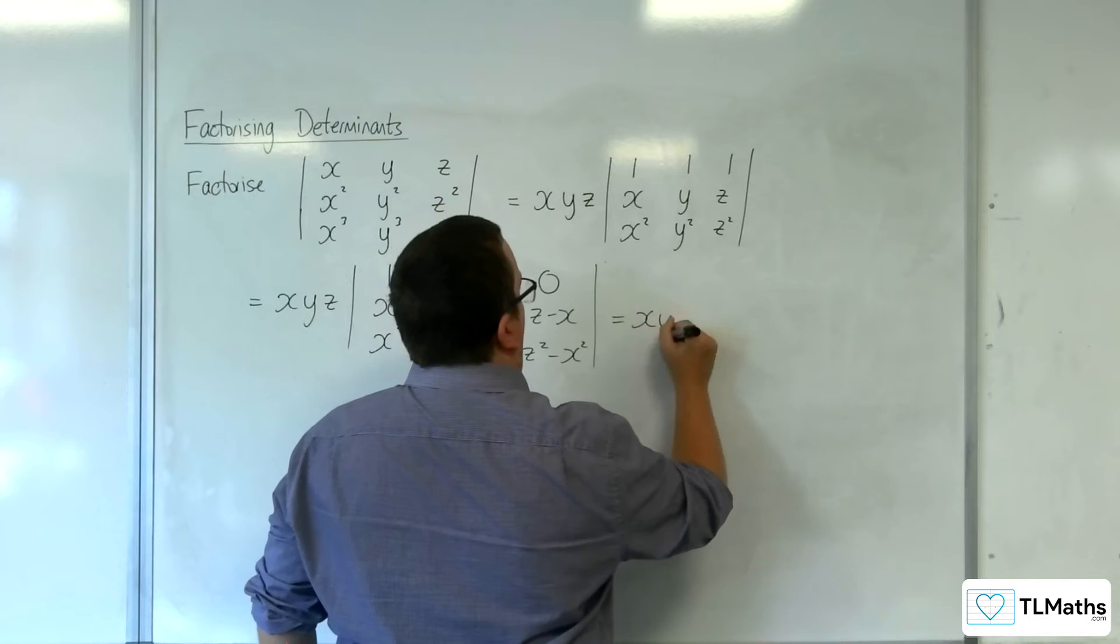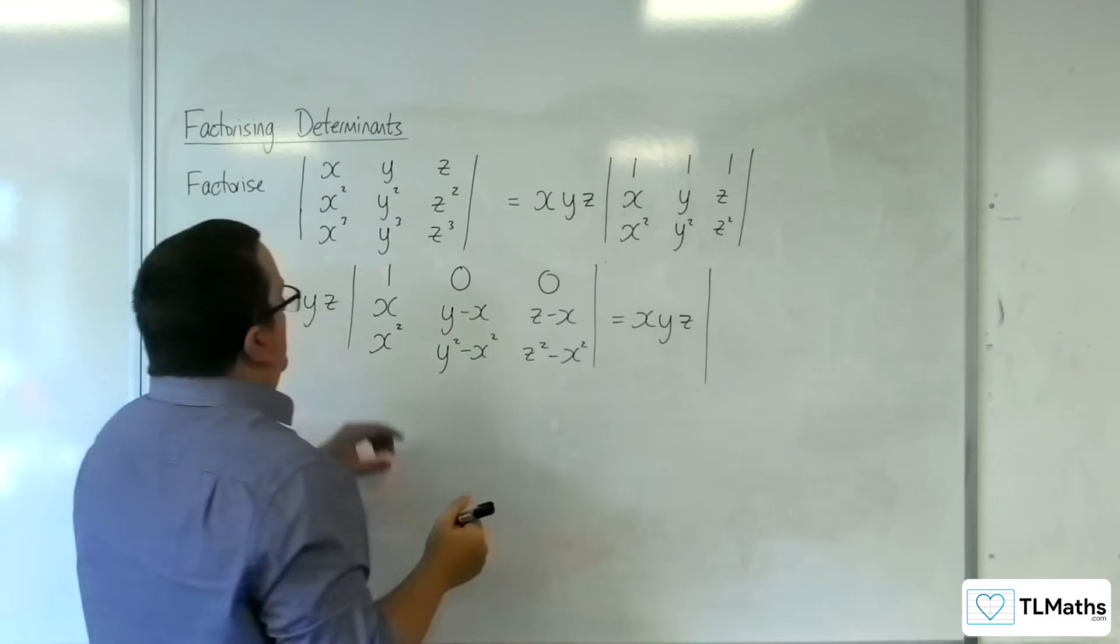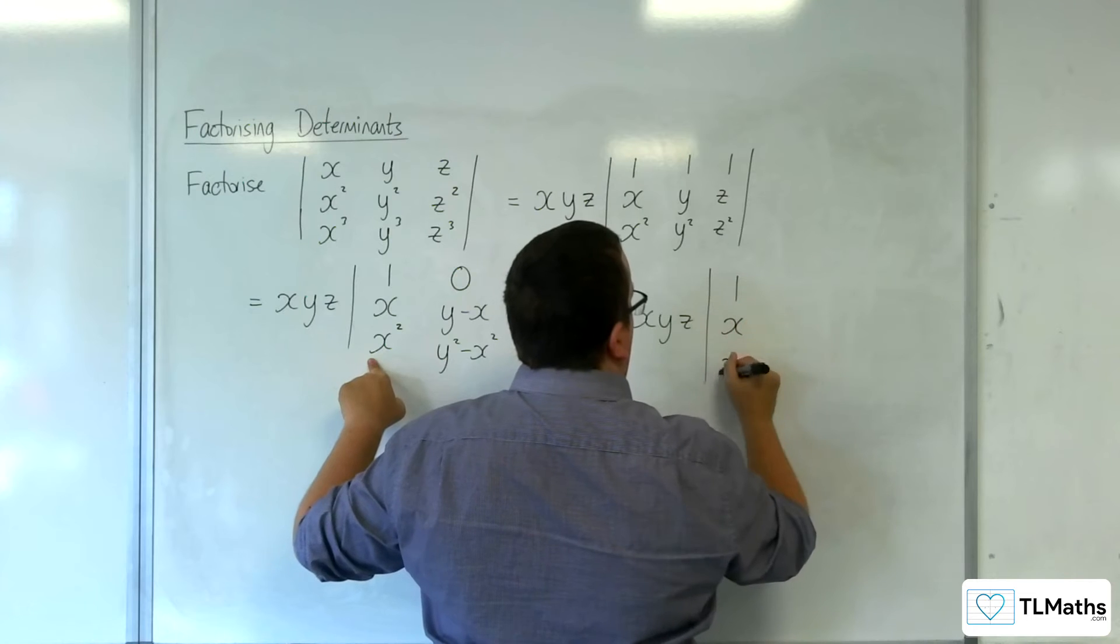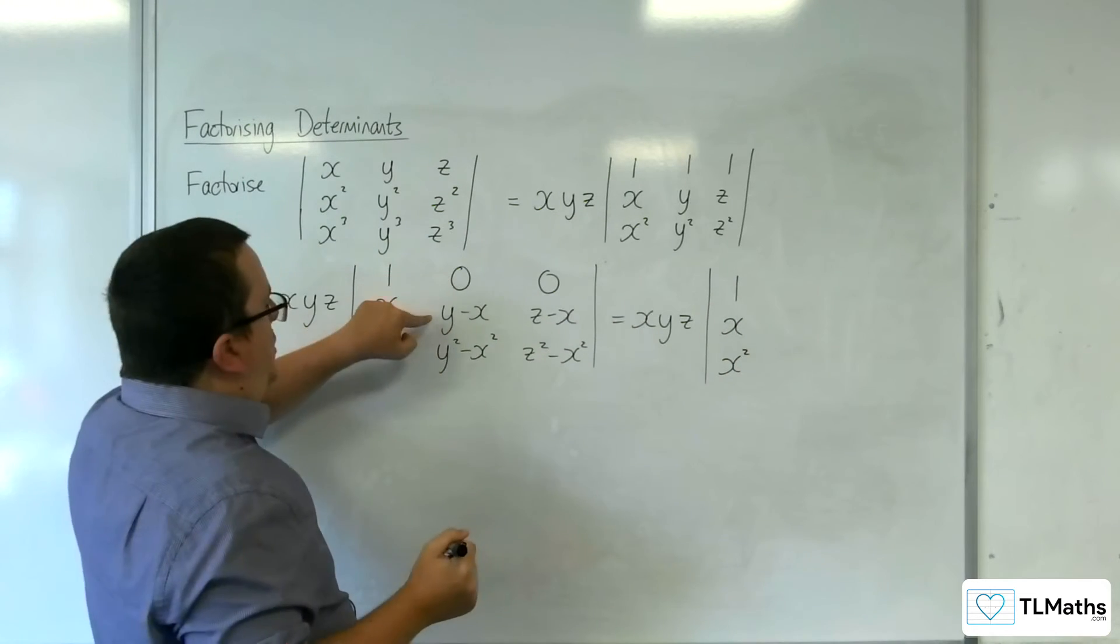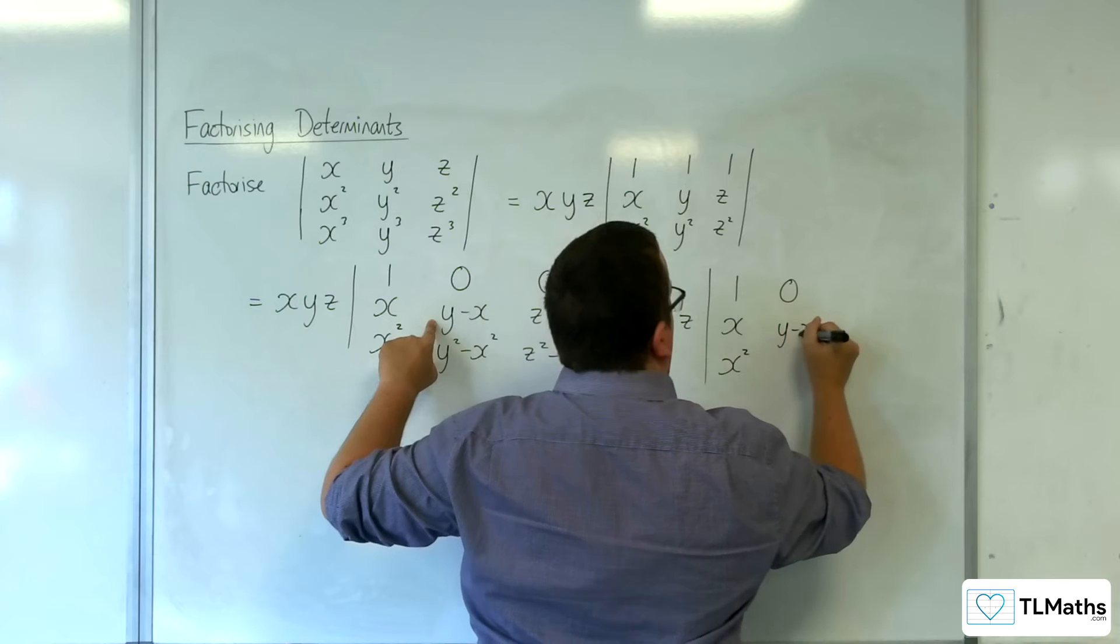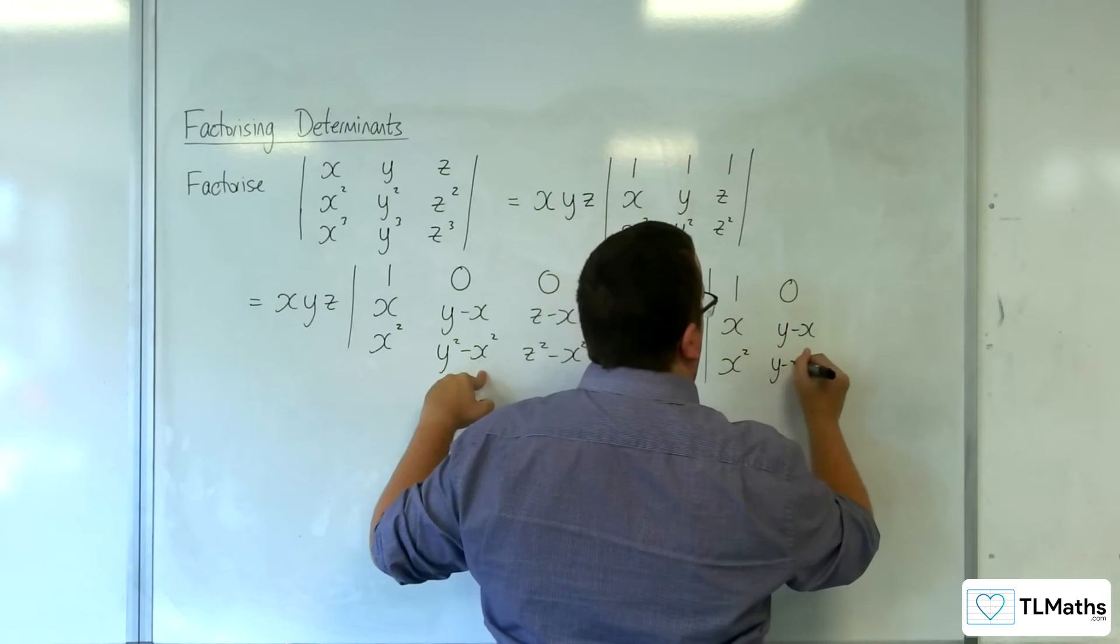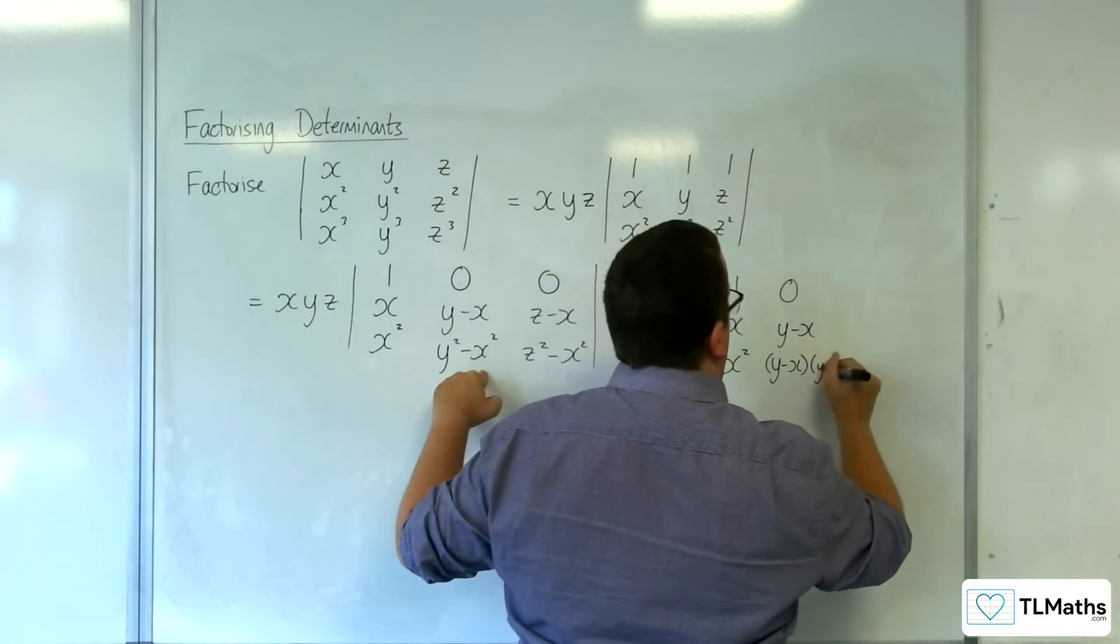We've got x, y, z, then we're going to have 1, x, x squared, then 0, y minus x, then factorizing this we're going to have y minus x times y plus x.